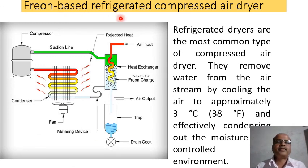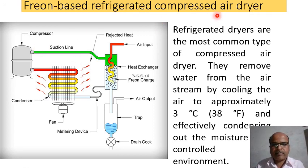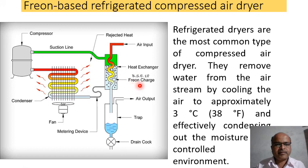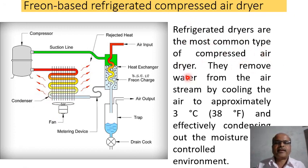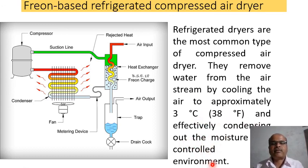Freon-based refrigerated compressed air dryer: The diagram shows compressor suction line, heat rejection, air input, heat exchanger, Freon charge, air output, trap, drain cock, metering device, fan, and condenser. Refrigerated dryers are the most common type of compressed air dryer. They remove water from the air stream by cooling the air to approximately 3 degrees centigrade, effectively condensing out the moisture in a controlled environment.